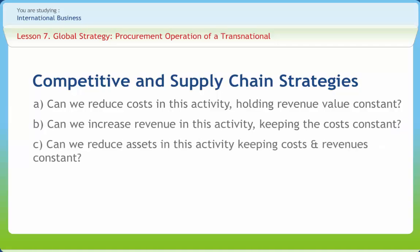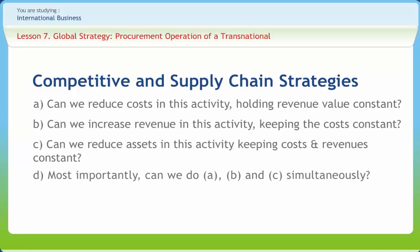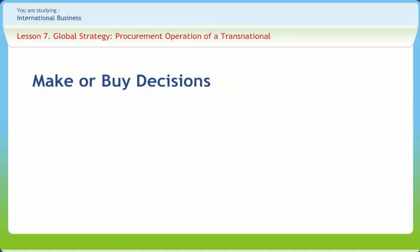For each value-added activity, the key questions are: can we reduce costs in this activity, holding revenue value constant? Can we increase revenue in this activity, keeping the costs constant? Can we reduce assets in this activity, keeping costs and revenue constant? Most importantly, can we do A, B and C simultaneously? By systematically analyzing cost, revenues and assets in each activity, the business unit can achieve cost and differentiation advantage.